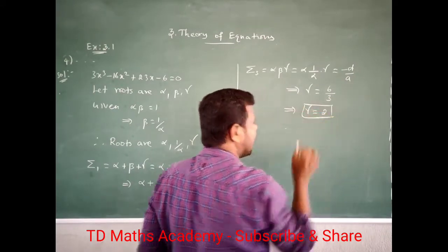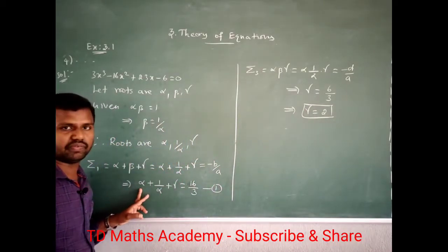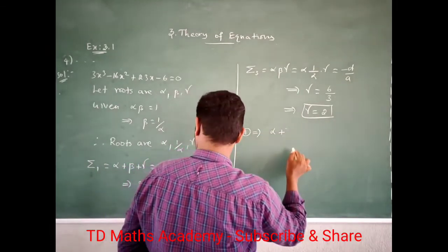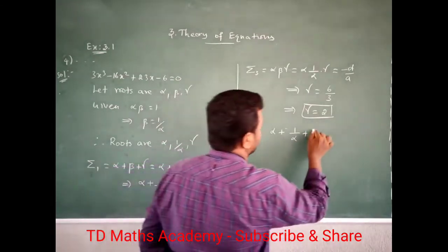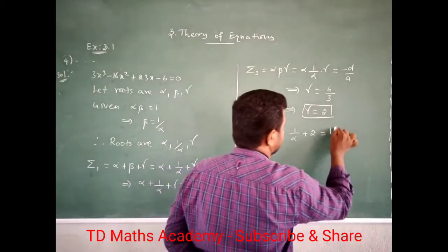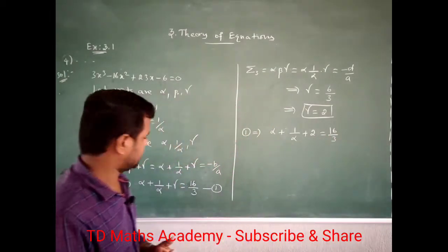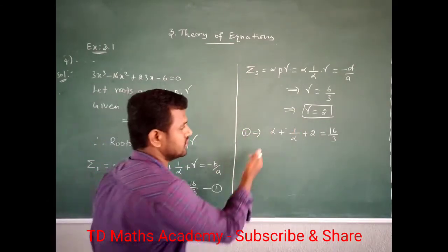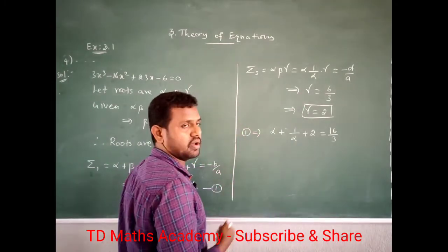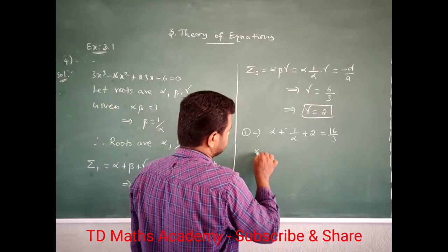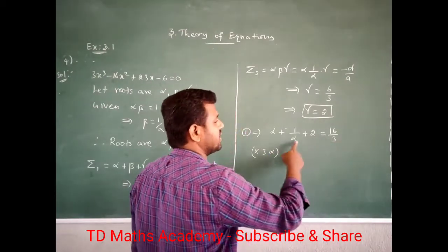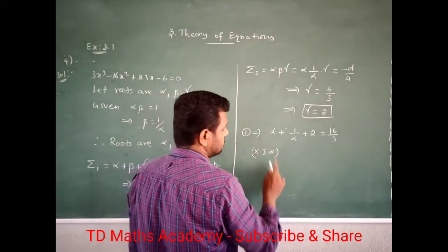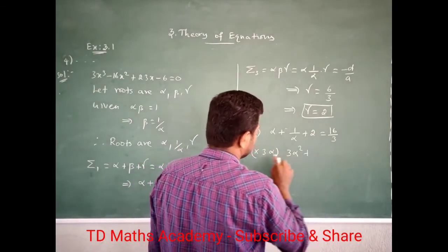Which implies gamma value is 2. Now substitute this into the first equation. First equation implies: alpha plus 1 by alpha plus, instead of gamma substitute 2, which is equal to 16 by 3. The unknown here is only alpha. So multiply throughout by 3 alpha to clear the fraction: 3 alpha squared plus 3 into 3 alpha.